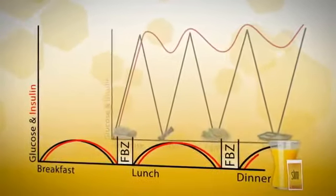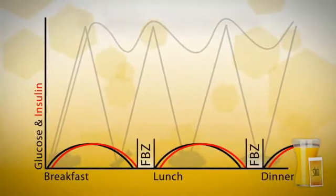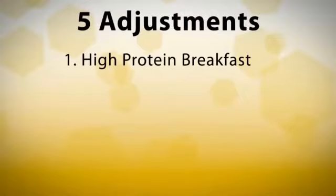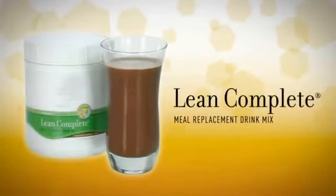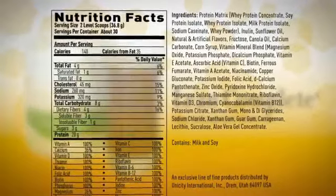If you're in a hurry to lose that excess fat and want to accelerate your success with BIOS Life Slim, we suggest five simple adjustments you can start today. Number one, eat a high protein breakfast each morning. You'll love our delicious lean complete meal replacement shake and it meets the criteria of a high protein, low carbohydrate breakfast.